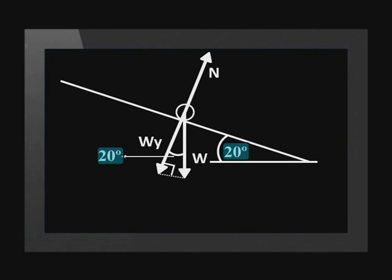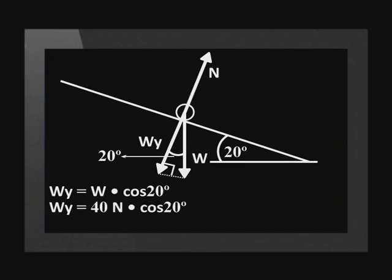The angle between W and WY is the same as the angle of the slope. This is 20 degrees in this question. So we find that WY equals W cosine 20 degrees. Remember that the sled's weight, W, is 40 newtons. So WY is 37.59 newtons.